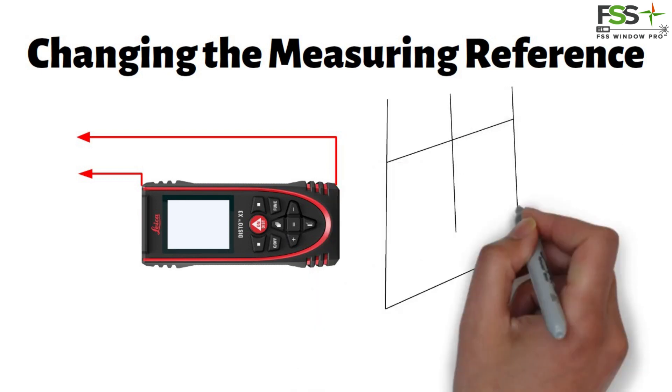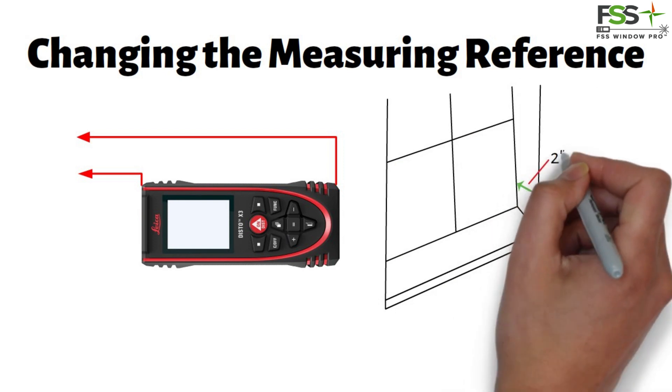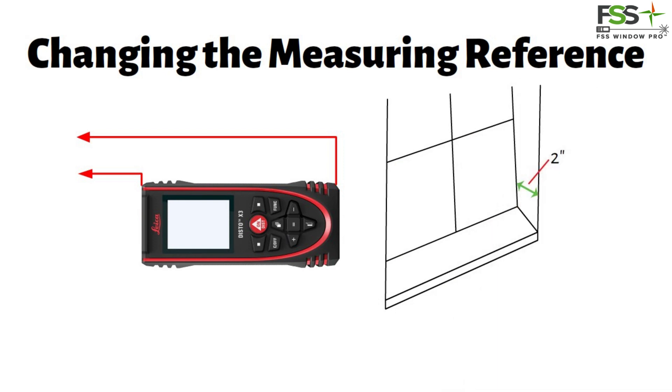An example of when you may want to measure from the front of the device is to measure a window's sill depth. As long as the sill depth is greater than 2 inches, you can measure it with the laser device instead of using a tape measure.